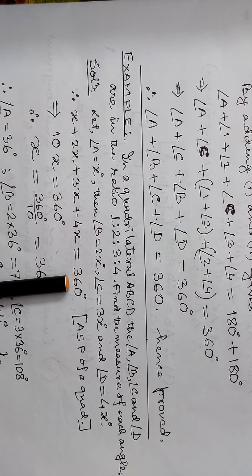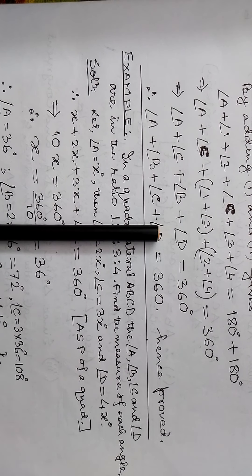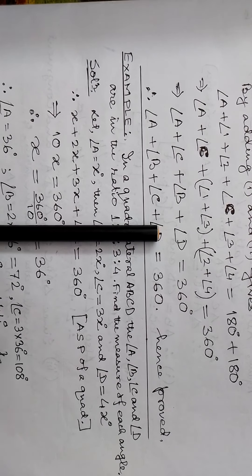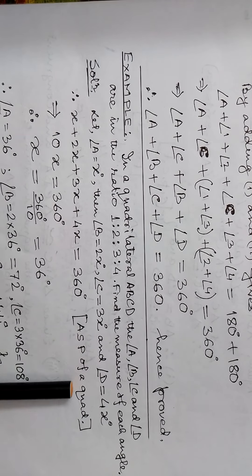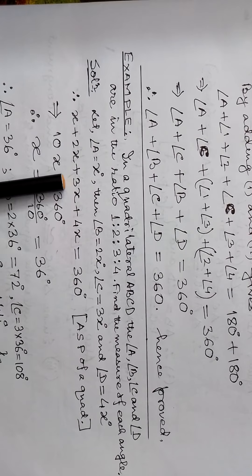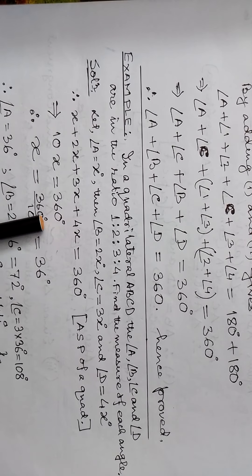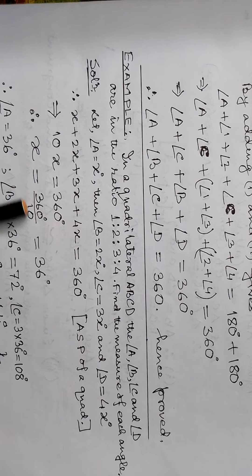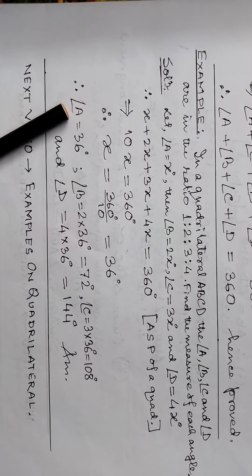Using the angle sum property of a quadrilateral — the theorem says the quadrilateral angle sum is 360 degrees. So x plus 2x plus 3x plus 4x equals 360. Adding: 4 plus 3 is 7, plus 2 is 9, plus 1 is 10x equal to 360. So x equals 360 divided by 10, which is 36 degrees.